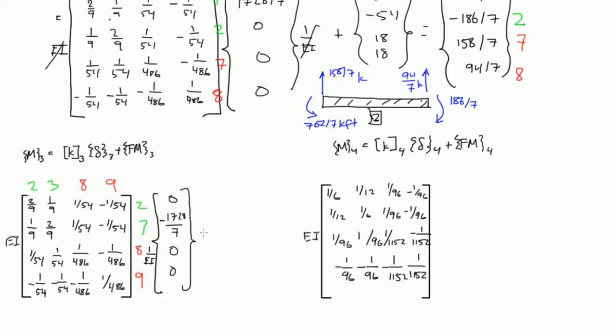And then to that we add FM3. And if you recall, FM3 was 54, negative 54, 18, and 18. And if you solve that out,